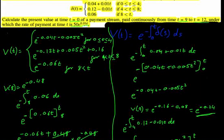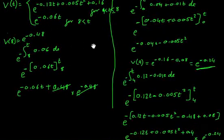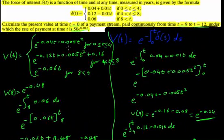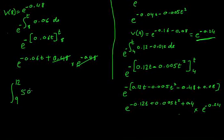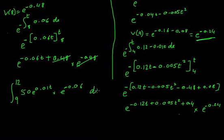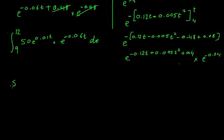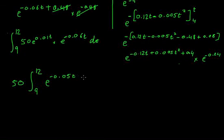Now we can bring this continuous payment stream back to present value. We take the integral from 9 to 12 of the payment rate 50e^(0.01t) multiplied by the discount factor e^(−0.06t) dt. Taking 50 outside, and combining the exponentials: e^(0.01t) times e^(−0.06t) equals e^(−0.05t), so we have 50 times the integral from 9 to 12 of e^(−0.05t) dt.